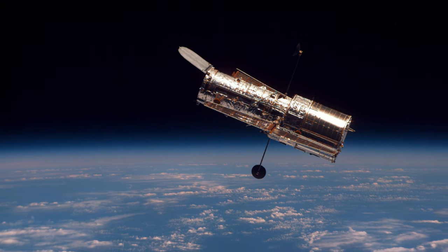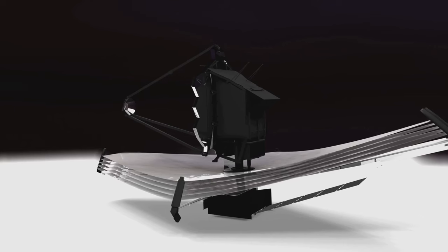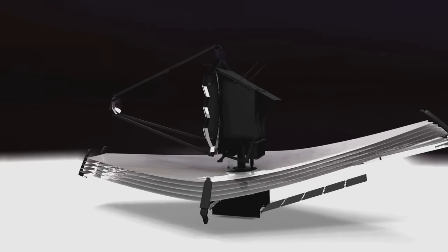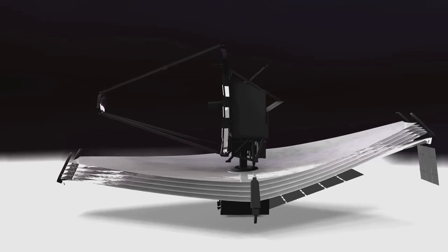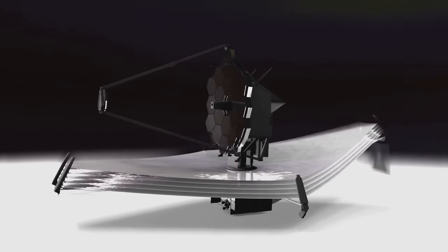Each segment is coated with a thin layer of gold, enhancing its ability to reflect infrared light, and can be adjusted individually, allowing astronomers to fine-tune the telescope's focus.